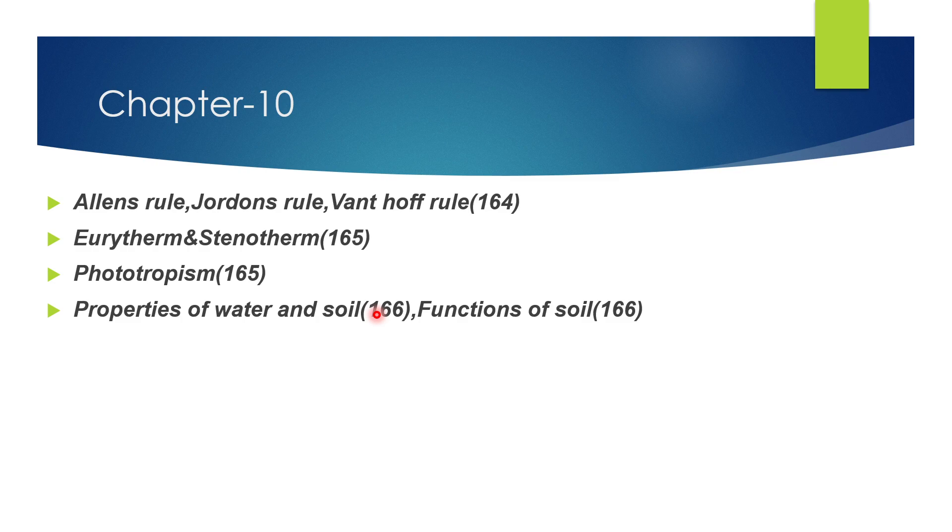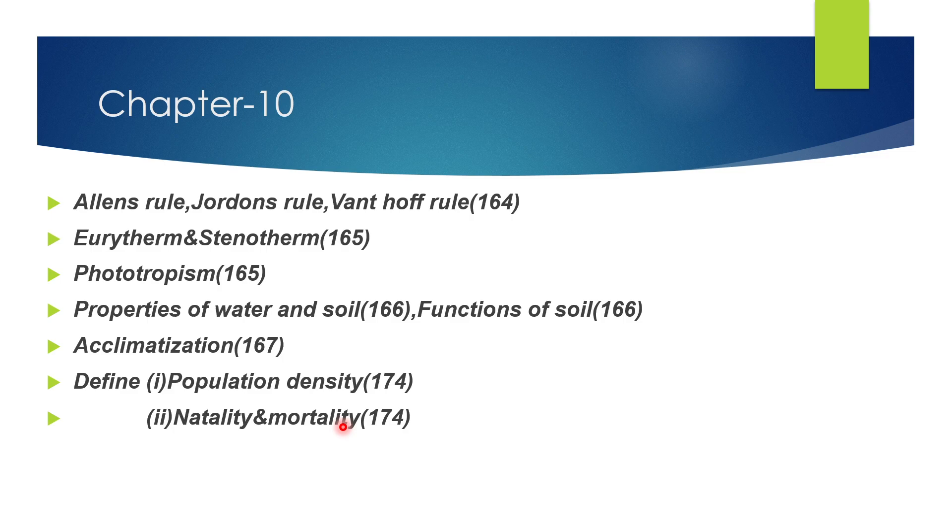Next, define population density, page 174. Define natality and mortality, page 174. This could be a five mark question. Include the definition and formulas, and the difference can be mentioned. Next, population interaction table, page 176. Also look at book back questions 33 and 34. That's all about chapter 10.